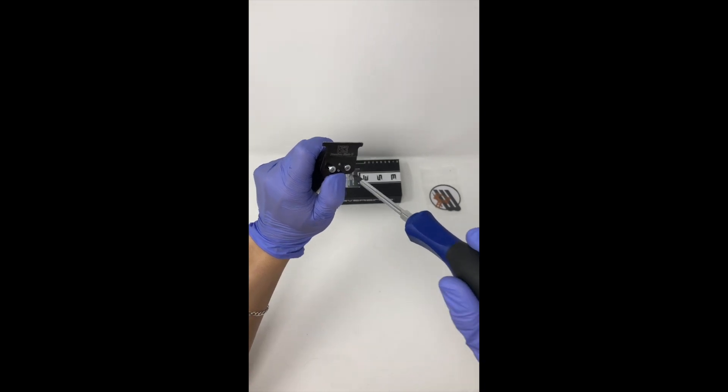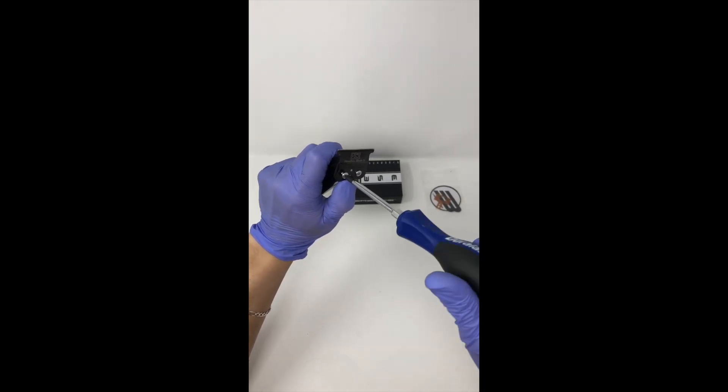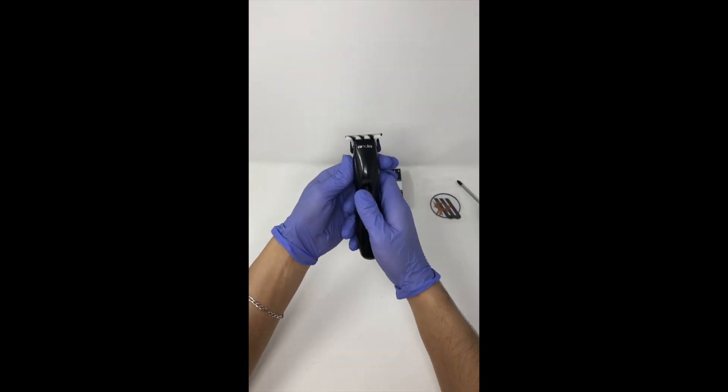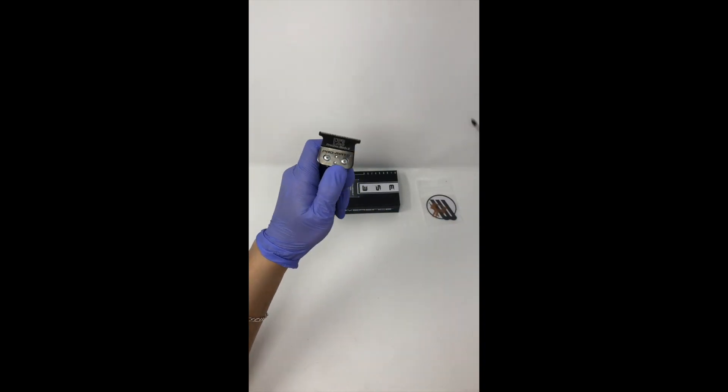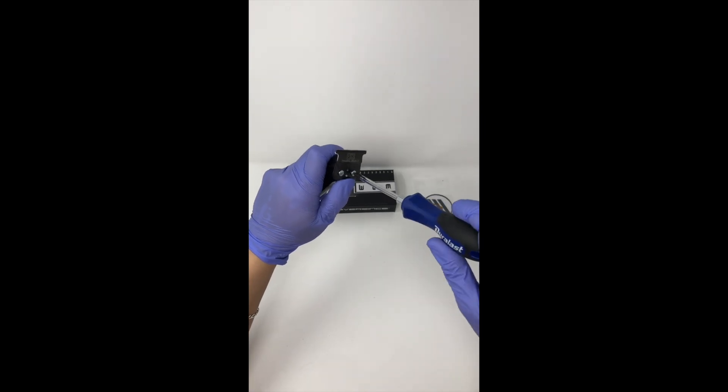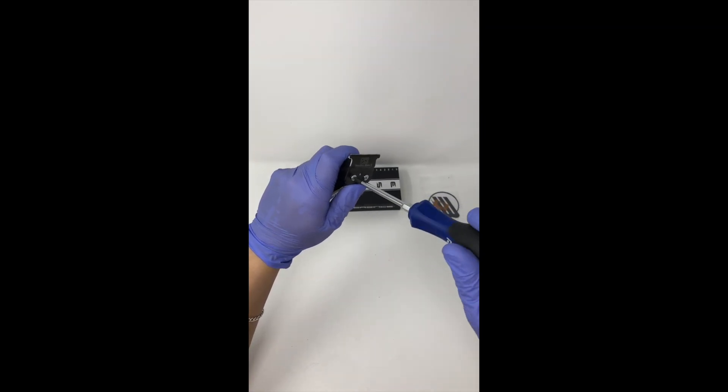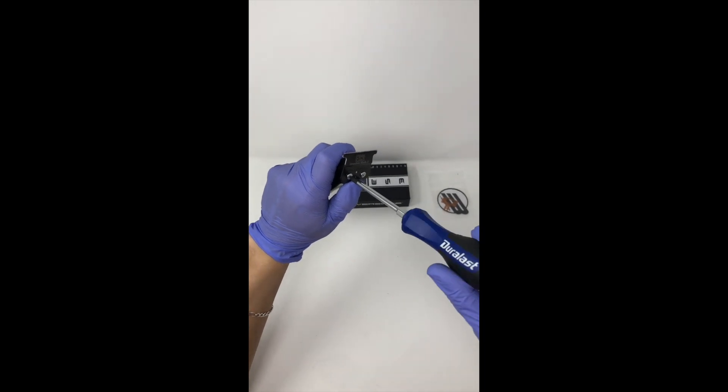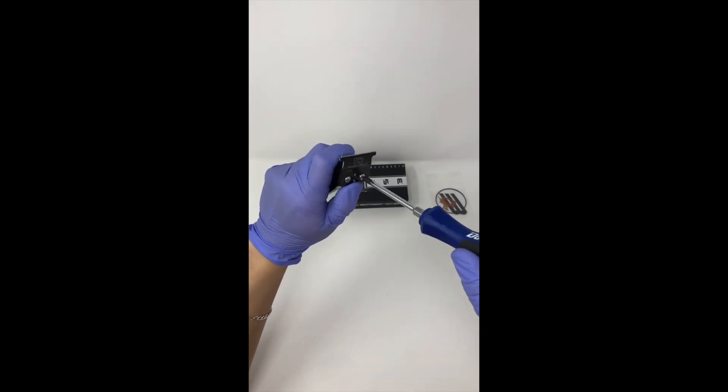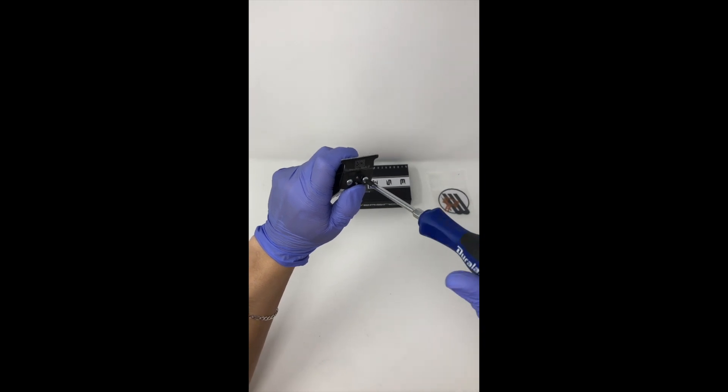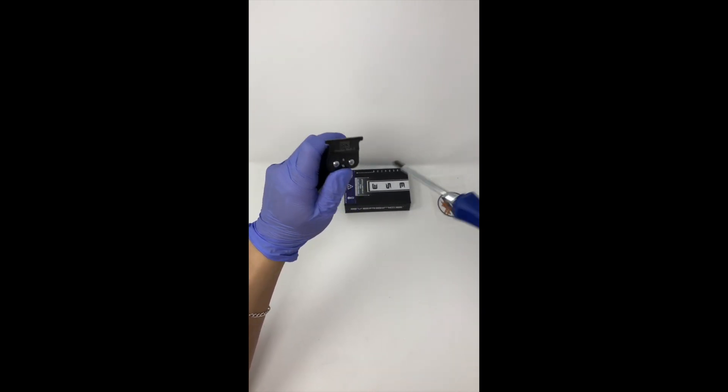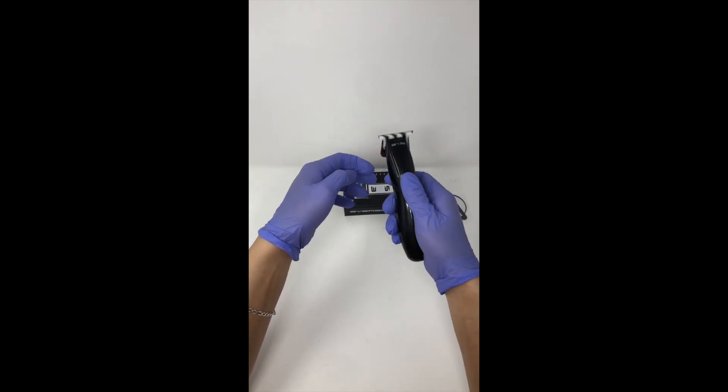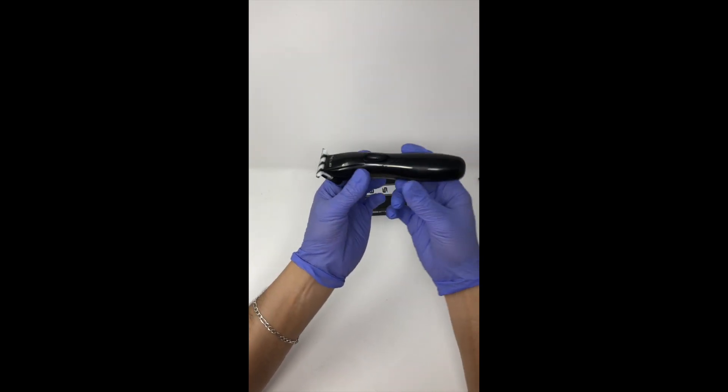Now screw that in snug, screw the left one in snug. Sometimes you have to go in a little bit tighter. Okay, now you should have a nice hitting blade.